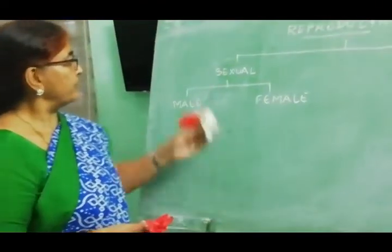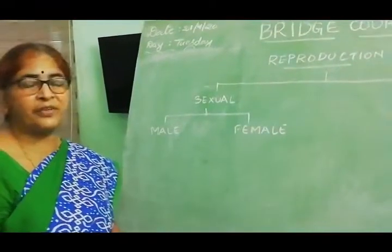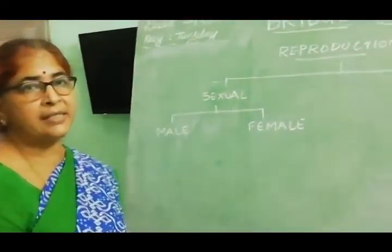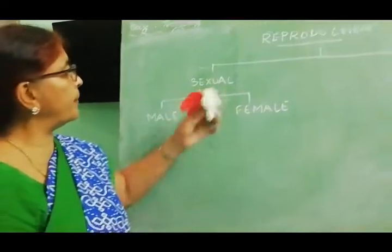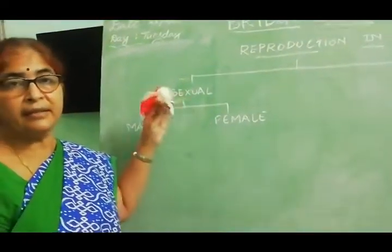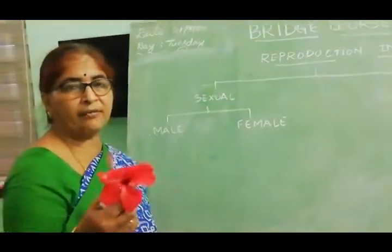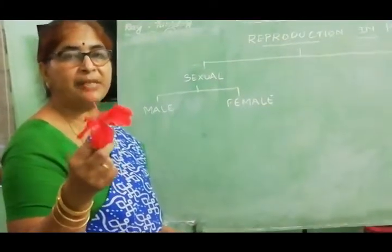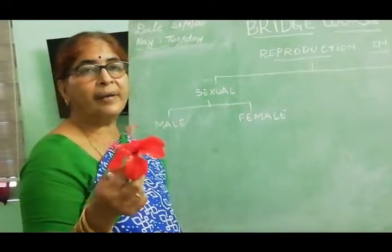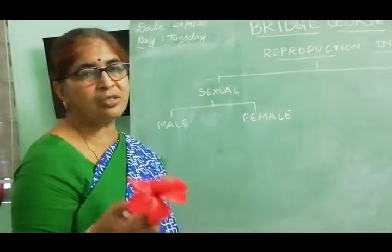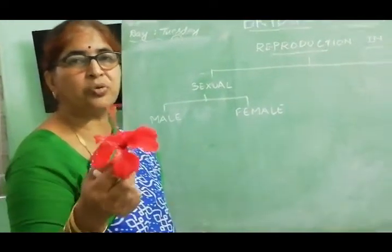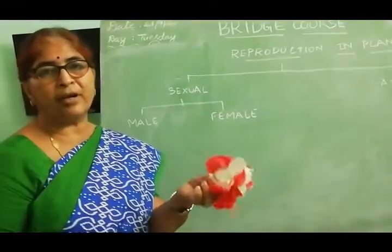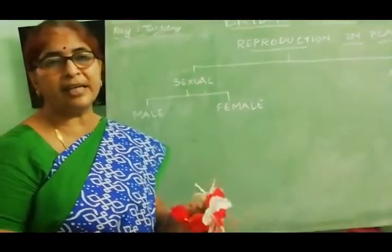To understand sexual reproduction, we first have to look at the different parts of a flower. This is a hibiscus flower, also called the shoe flower in common English. This flower comes in a number of colors.